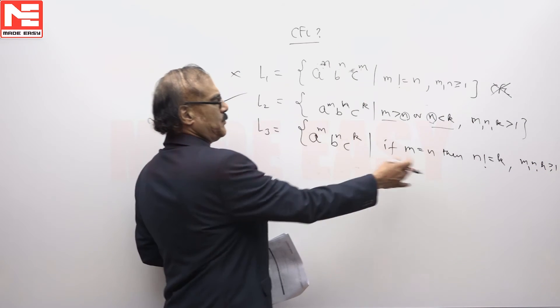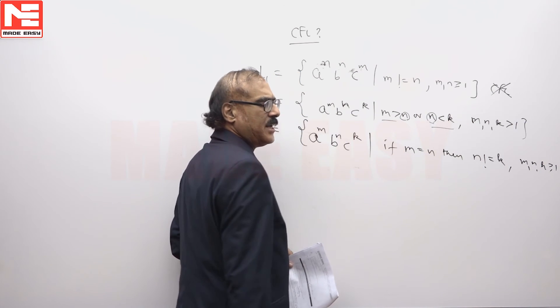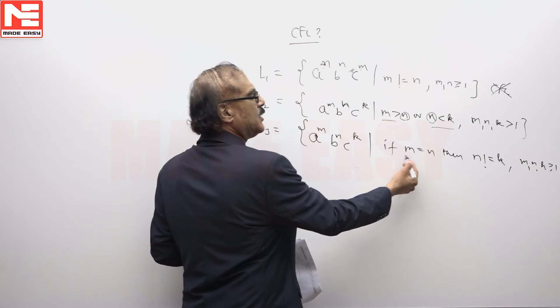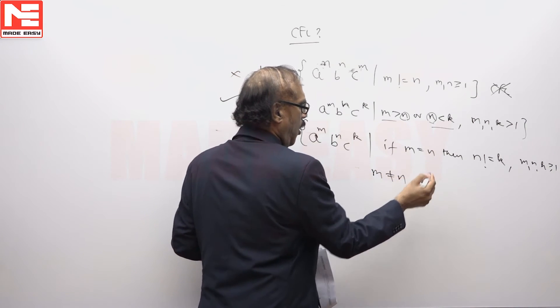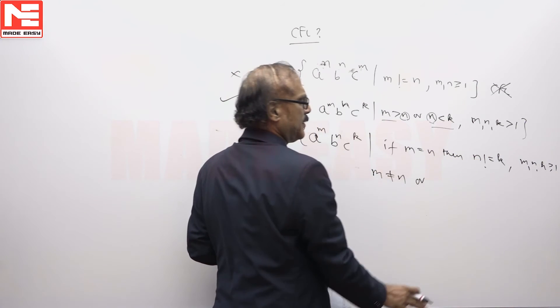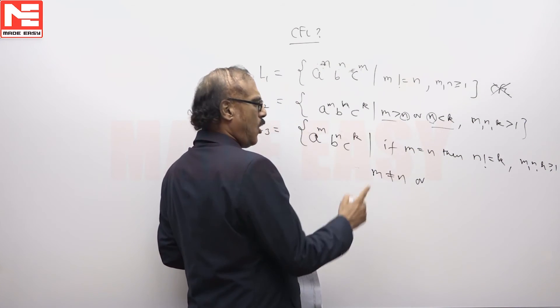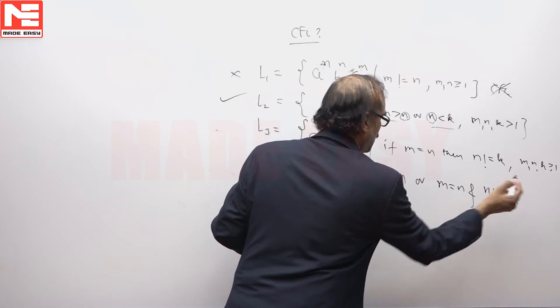Now let us expand this because P implies Q. What is the meaning of if m is equal to n then n not equal to k? It means that 2 possibilities: either m is not equal to n, because when m not equal to n this can be anything because left hand side is false, or in case left hand side is true then the right hand side also is true.